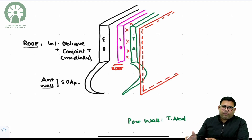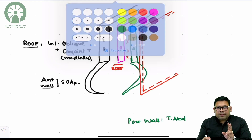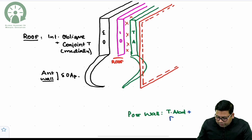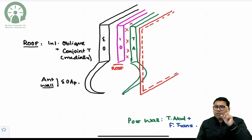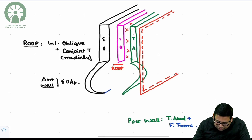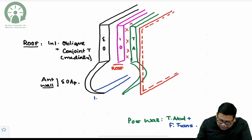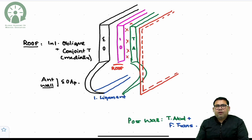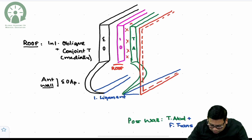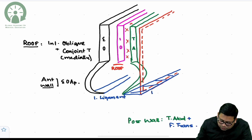The floor is a composite structure. The anterior wall is formed by the external oblique, and the posterior wall is formed by transversus abdominis and fascia transversalis. Anteriorly, the external oblique rolls on itself to form a ligamentous structure known as the inguinal ligament — it is a condensation of the external oblique aponeurosis. Similarly, the posterior wall structures condense to form the iliopubic tract.